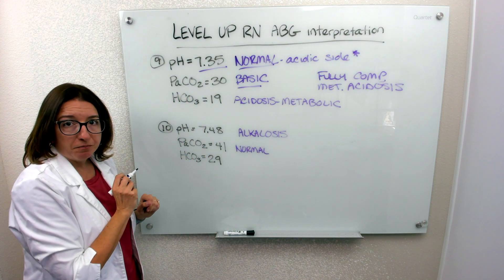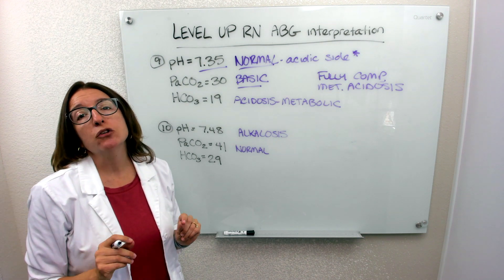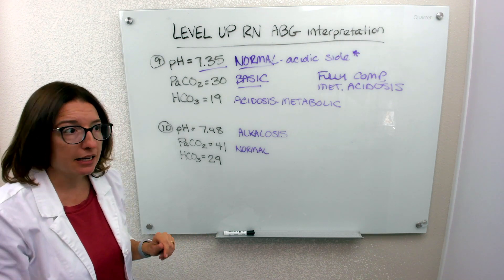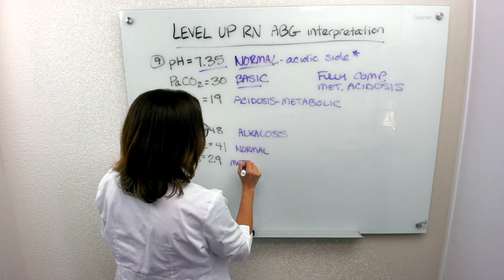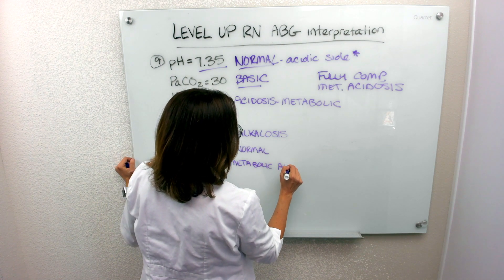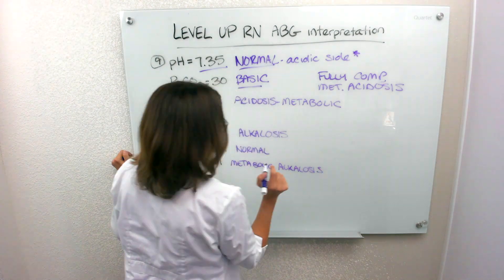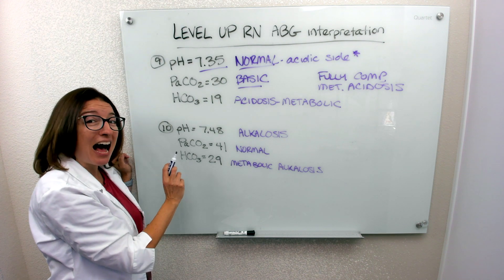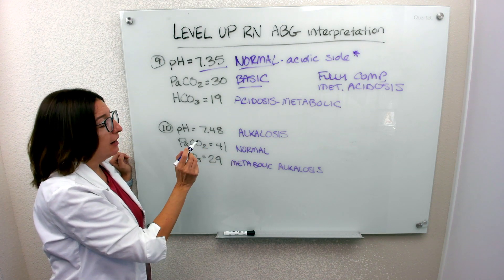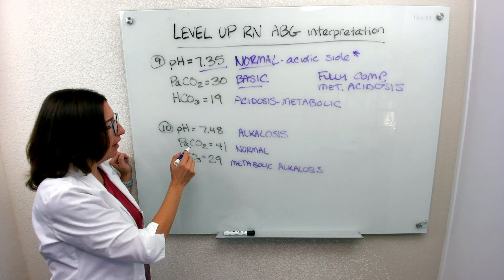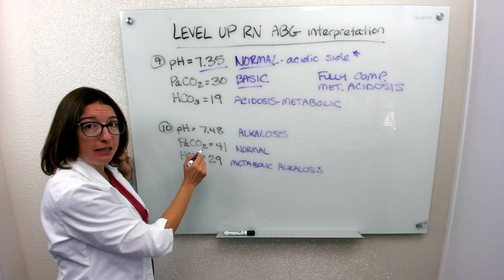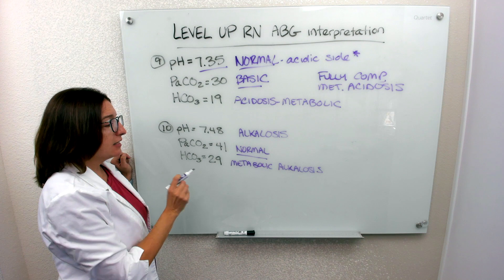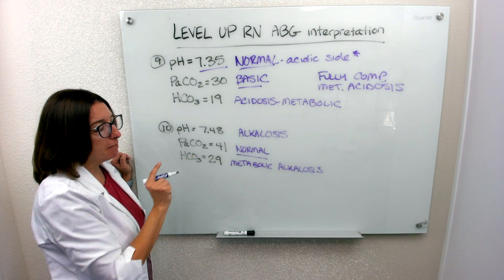Then we look at the metabolic system — HCO3. It should be between 22 and 26, but it is 29, so it is out of range on the basic side. So we have metabolic alkalosis. We know it is not compensated at all because the respiratory system, as represented by PaCO2, isn't doing anything. So in this case, we have uncompensated metabolic alkalosis.